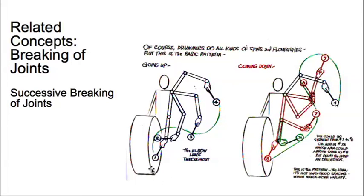Here's an example taken from the Animator's Survival Kit of a character banging a drum. What Art demonstrated was how you could get flexibility in parts of the body without actually bending the body parts themselves. All you have to do is break the joints in succession.